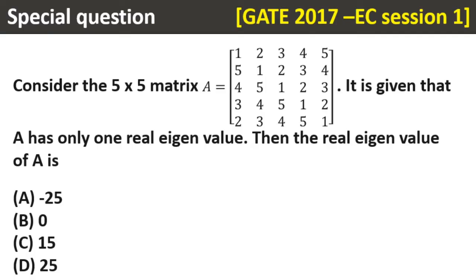This question was asked in 2017 EC session paper. The question is, consider a 5x5 matrix which is this matrix. It is given that A has only one real eigenvalue. Very important. Then the real eigenvalue of A is what? There are four options: A is -25, B is 0, C is 15, and D is 25. So pause the video and try it yourself.